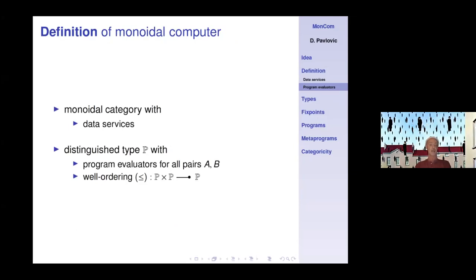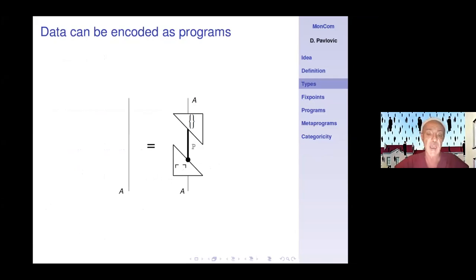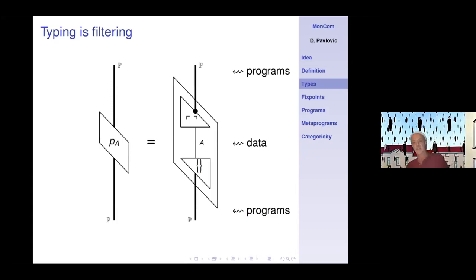The definition of a monoidal computer is: an arbitrary symmetric, even strict, monoidal category with data services — so we can copy and delete things — with a distinguished well-ordered type P and program evaluators for all pairs A, B. The first consequence is that every type is a retract of the type of programs. Programs are data, but this says data are programs too: we can encode all data as programs by partially evaluating the program for the identity function.